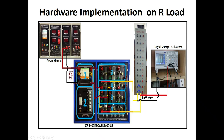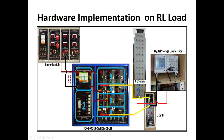For hardware implementation on R-load, you require a power module, SCR diode power module, resistive load, and digital storage oscilloscope. The R-load resistance value is 25 ohms: two 50-ohm resistors connected in parallel give an equivalent value of 25 ohms. Measure across the output — connect the DSO probe between the R starting point and the L ending point.